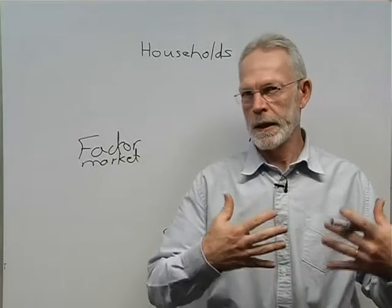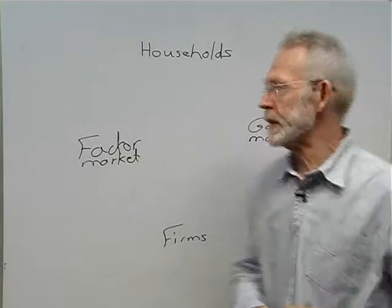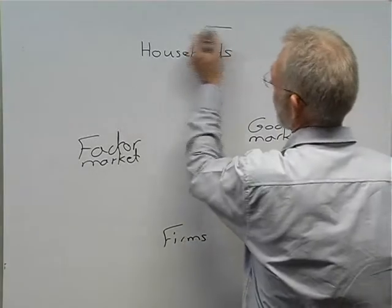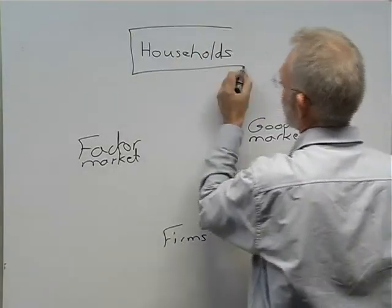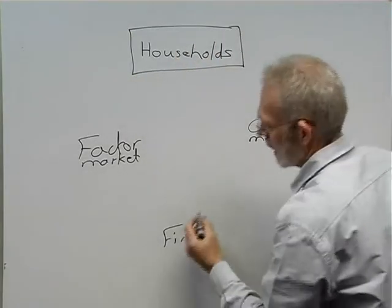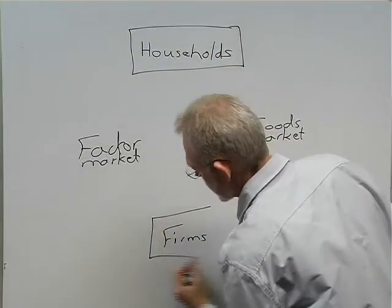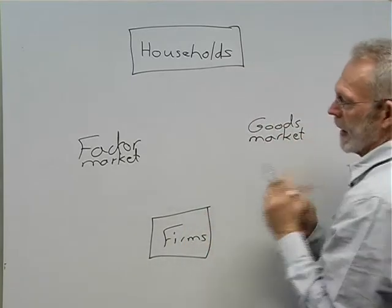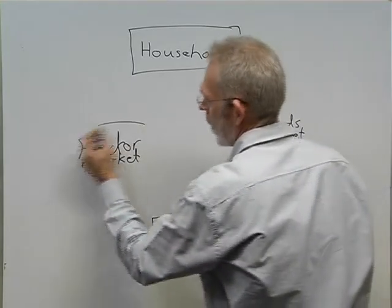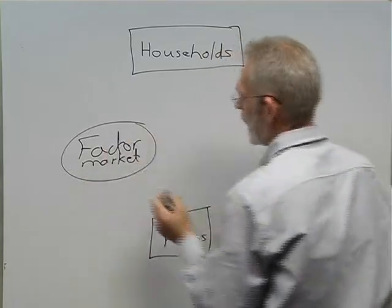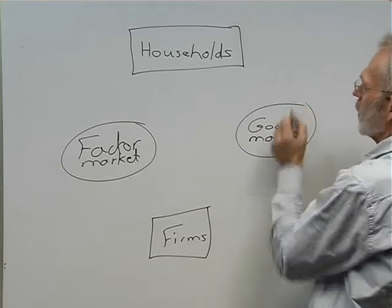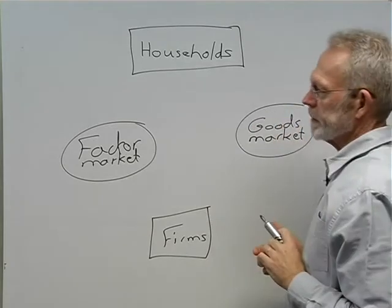We've seen the participants in our model of the economy are households and firms, and they interact on the factor market and also on the goods market.